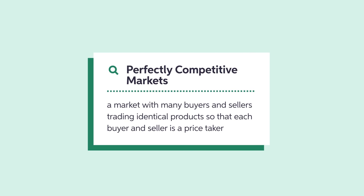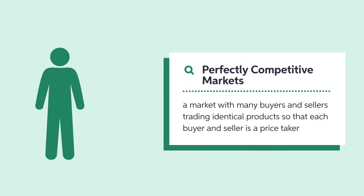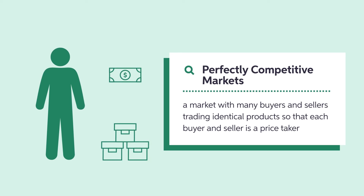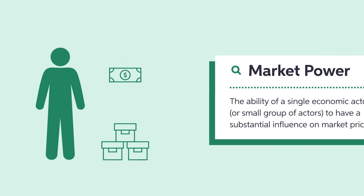Our first assumption is that the markets we are looking at are perfectly competitive. However, in actual economies, competition may be far from perfect. An example of this is when a single buyer or seller can influence the market prices and/or quantity. This situation is known as market power. When a buyer or seller can keep the price and quantity away from the levels determined by the equilibrium, it can make the market outcome inefficient.